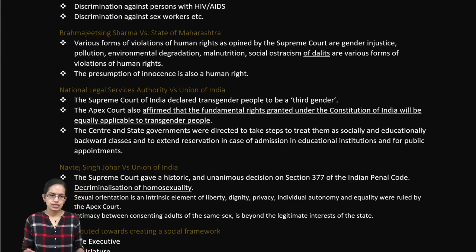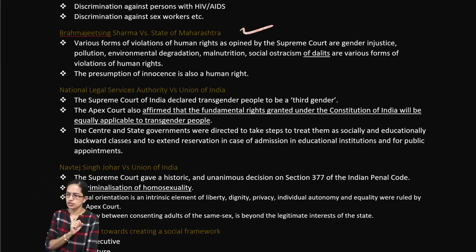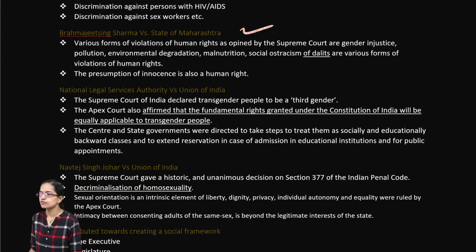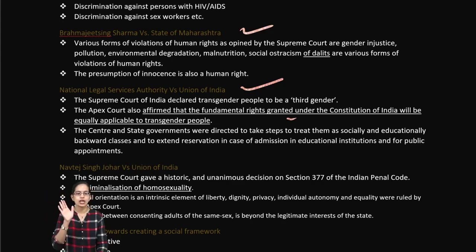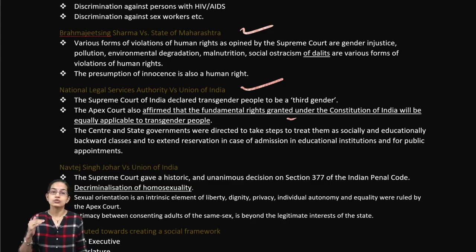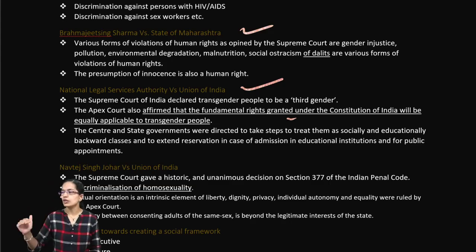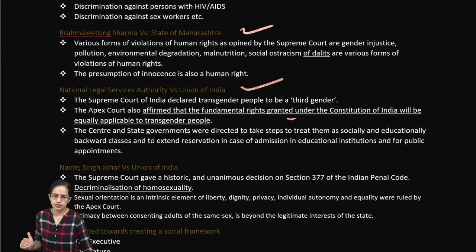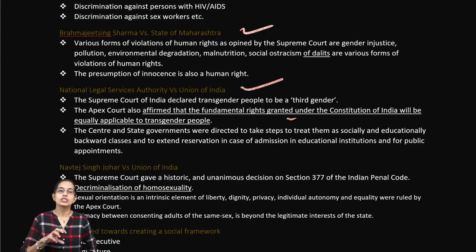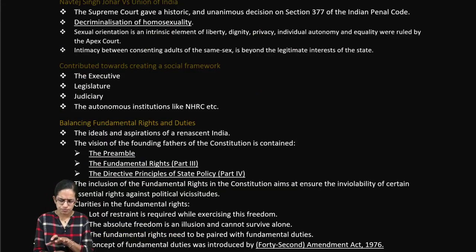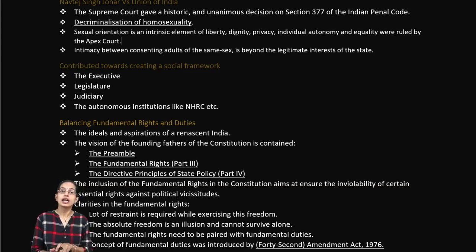Several important cases were raised in this context. The Brahmajit Singh Sharma versus State of Maharashtra case focused on atrocities against Dalits. The National Legal Services Authority versus Union of India case established that fundamental rights under the constitution apply even to transgender persons. The Navjit Singh Johar case addressed issues of homosexuality. There were also issues raised concerning Dalits, women, gender discrimination, and people with disability.